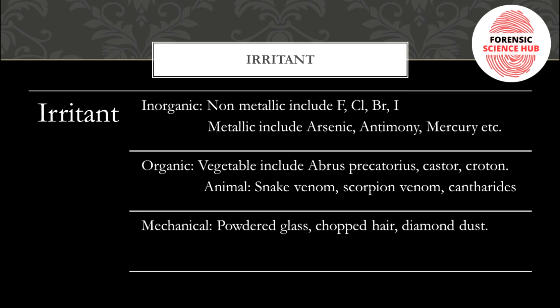The second type is irritant poison. Irritant poisons cause some kind of irritation or pain in the body, which may even lead to excessive vomiting. They can further be divided into inorganic irritant poison, organic irritant poison, and mechanical irritant poison. Inorganic irritants are further divided into metallic and non-metallic. Non-metallic includes fluorine, chlorine, bromine, and iodine, whereas metallic inorganic irritants include arsenic, antimony, and mercury.